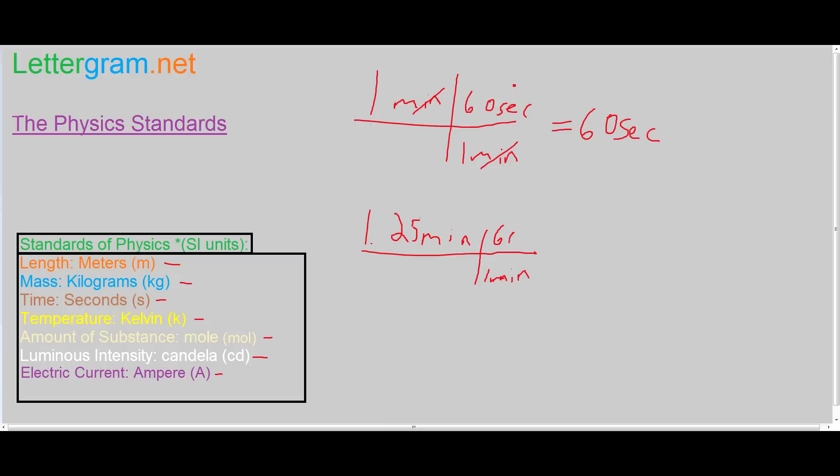and multiply it by 60 seconds. We cross these off and that will equal 75 seconds. If you want, just do that on a calculator: 60 times 1.25.